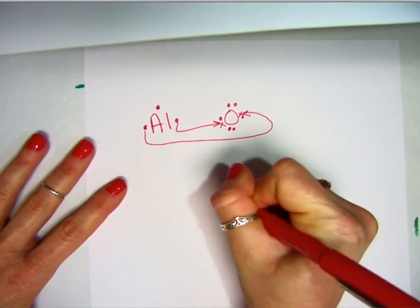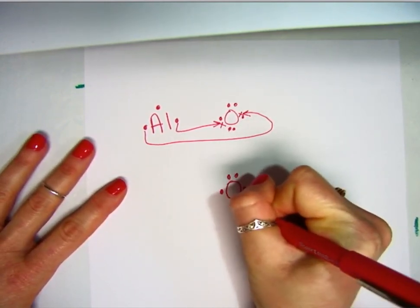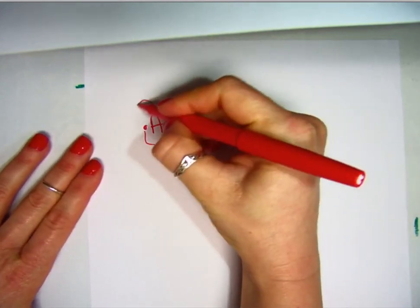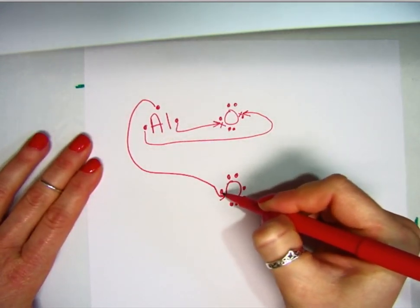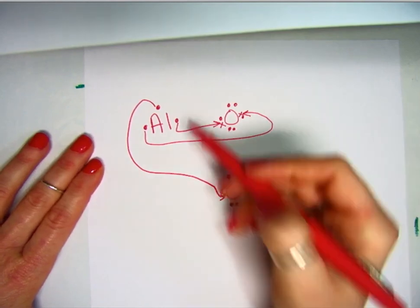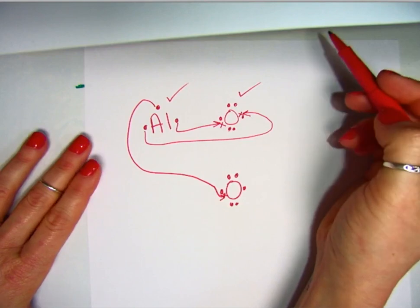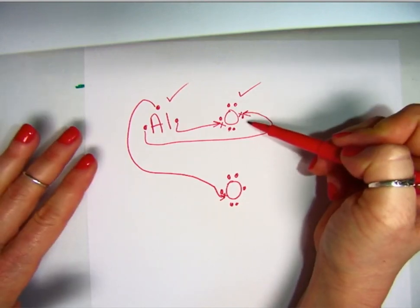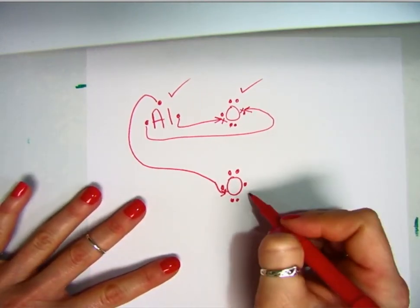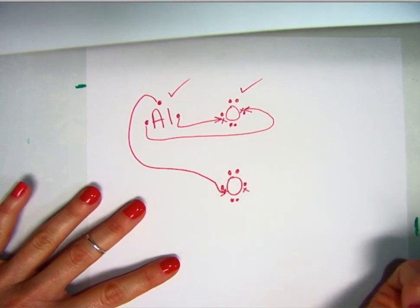So we're just going to draw another oxygen—one, two, three, four, five, six—and let aluminum donate that electron here. Now once it does, this aluminum is happy and this oxygen is happy, both have taken care of their valence electrons. However, this oxygen still has a vacancy.